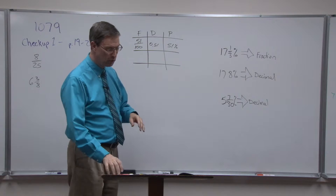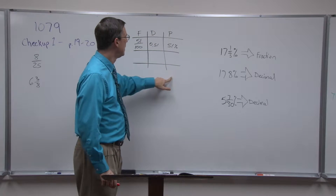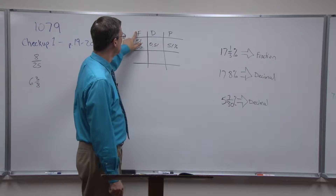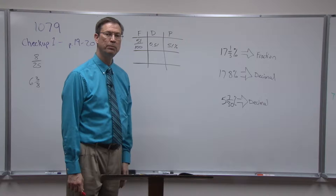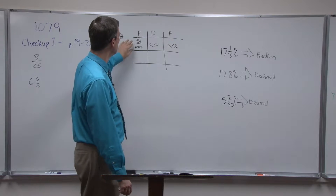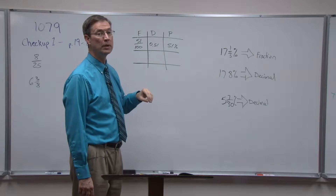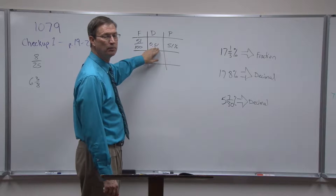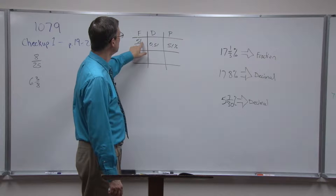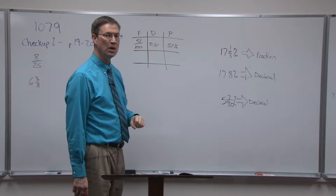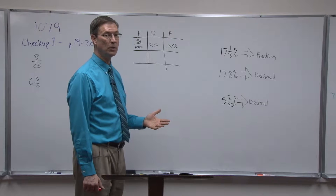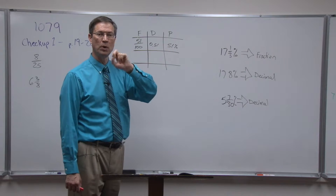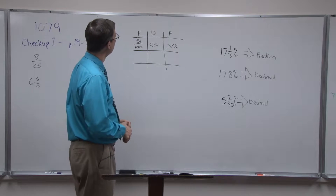I like to encourage students to make a cue card and memorize what I call reference numbers. F stands for fraction, D for decimal, P for percent. For example, the fraction 51 over 100 is the same as fifty-one hundredths, or 0.51. All you do is move the decimal twice. Once you have it as a decimal, move the decimal to the right twice and you have a percent — it's always twice.